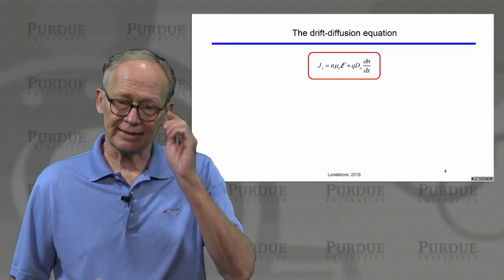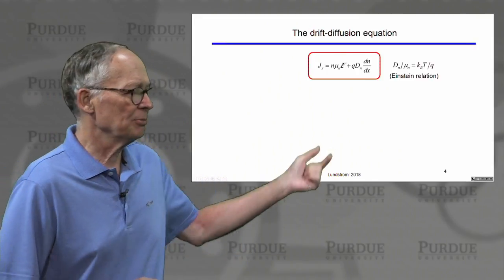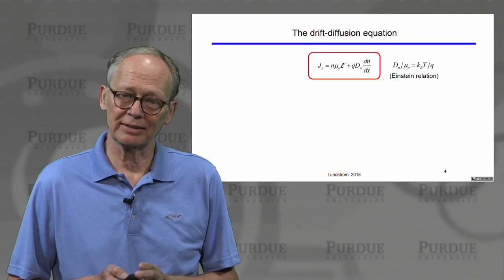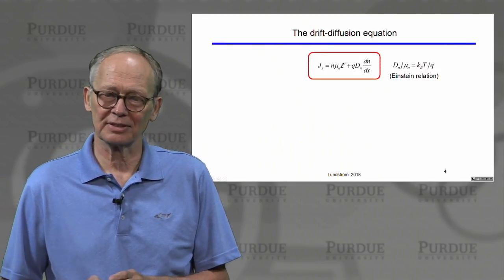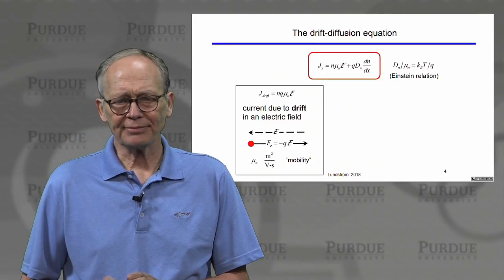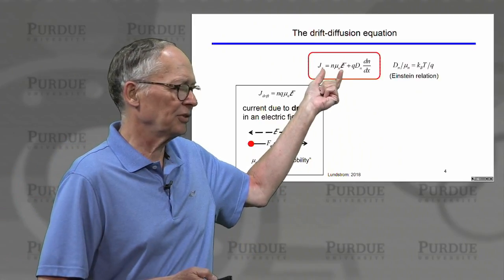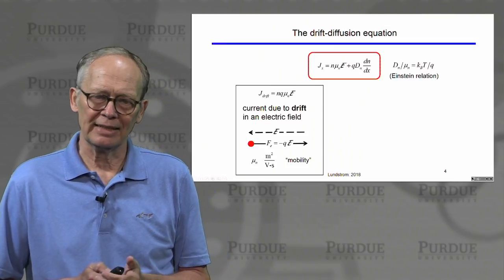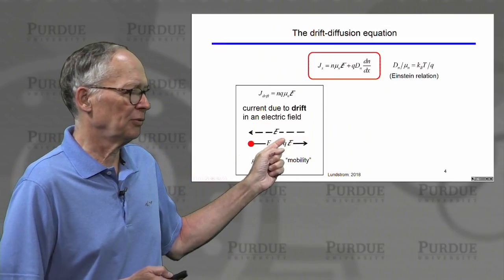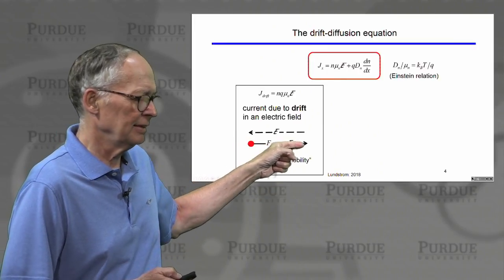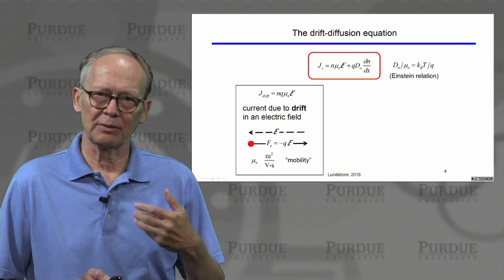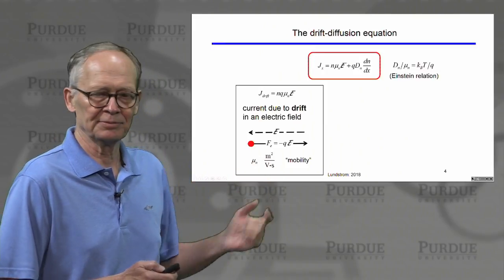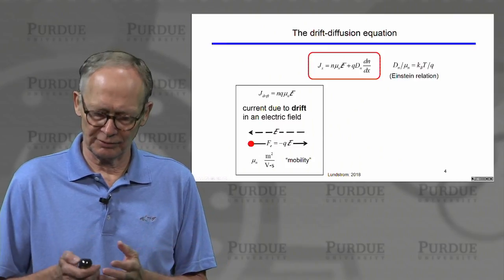Let's take a look at this drift-diffusion equation. The relation between the diffusion coefficient and mobility is one we've developed and seen a couple of times in these lectures. It was first introduced by Albert Einstein in 1905. Now let's look at these two components: the drift component and the diffusion component. The first component is due to electrons drifting in an electric field — an electric field exerts a force of minus q times the electric field on electrons.